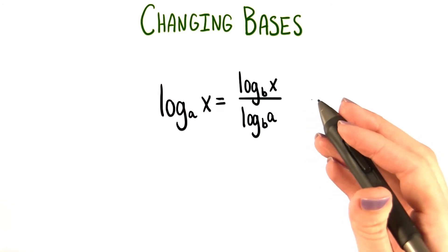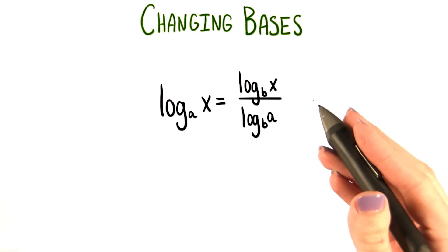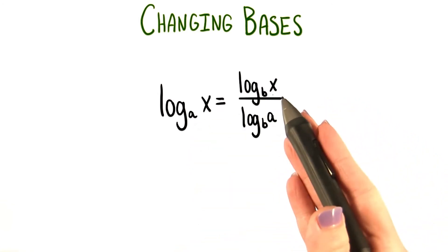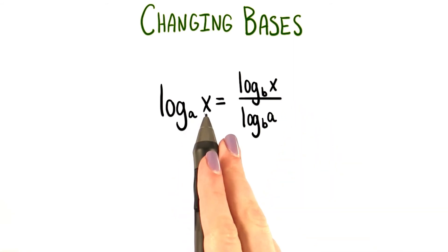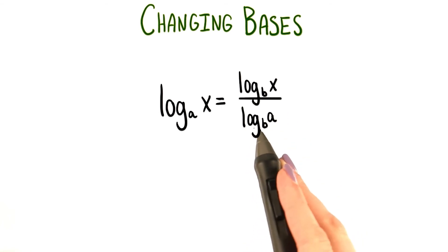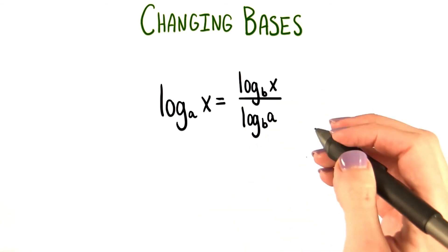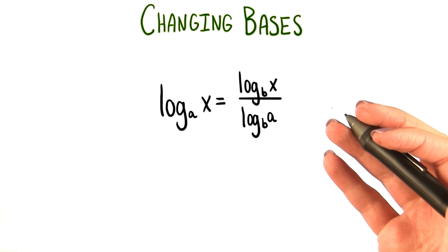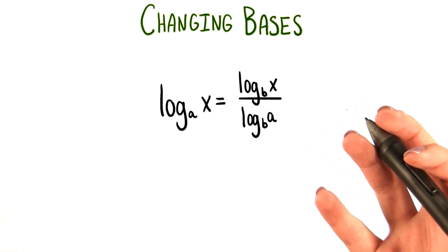This is a formula we can use to change a log from being base a to base b. We have log base a of x equals log base b of x over log base b of a. This probably feels a little confusing right now and kind of abstract, so let's try using it to see how it really works.